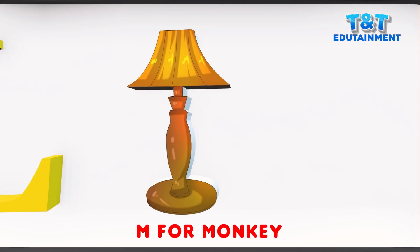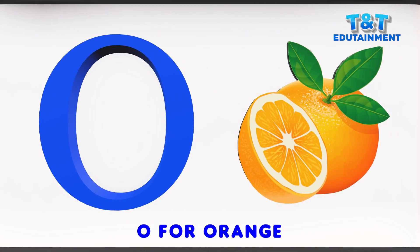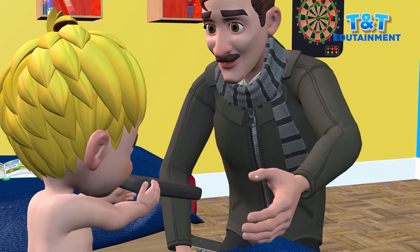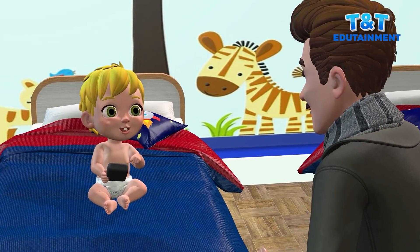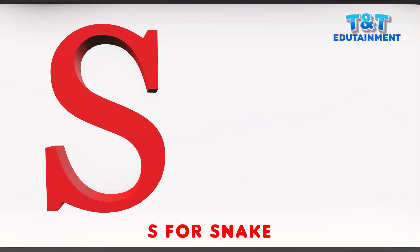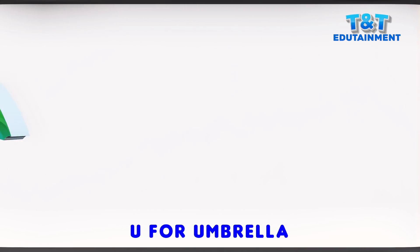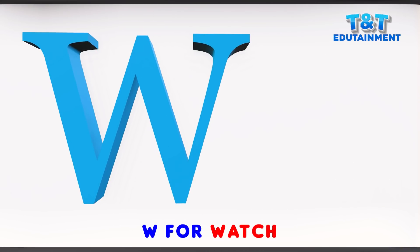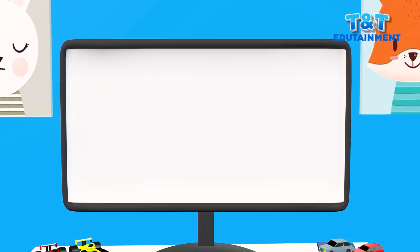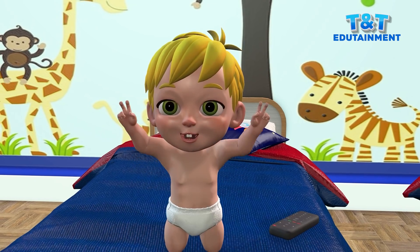I for Igloo, J for Jar, K for Kangaroo, L for Lamb, M for Monkey, N for Nest, O for Orange, P for Parrot, Q for Quilt, R for Rocket, S for Snake, T for Train, U for Umbrella, V for Van, W for Watch, X for X-Ray, Y for Yacht, Z for Zebra.